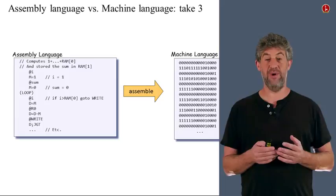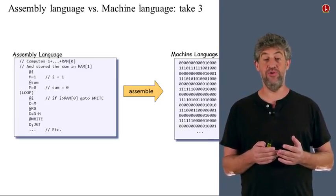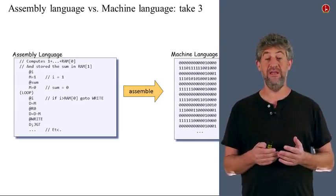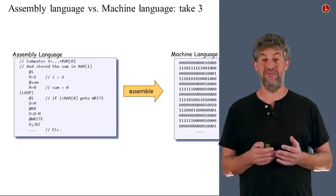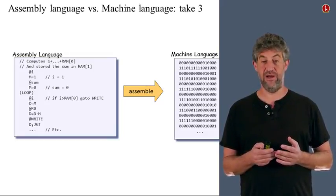How do you go from left to right? What is the assembler, which is the program that translates what you have on the left — the assembly language code — to what you have on the right, the machine language code?